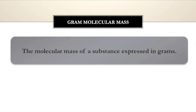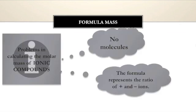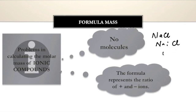There is a problem in calculating the molecular mass for ionic compounds. Ionic compounds do not have any molecules — the formula represents only the ratio of positive and negative ions. For example, NaCl is not actually a molecule; it's the ratio of Na and Cl, meaning they are in a 1:1 ratio. So instead of molecular mass, we have to calculate the formula mass by simply adding the atomic masses of the constituent atoms.